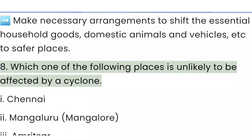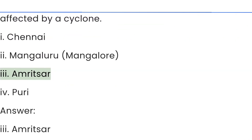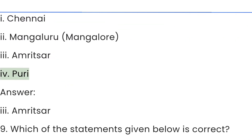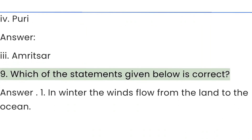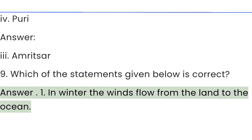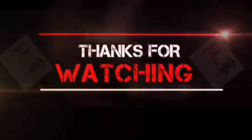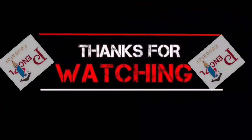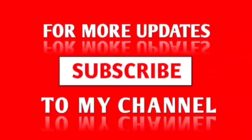Question 8: Which place is unlikely to be affected by a cyclone — Chennai, Mangaluru, Amritsar, or Uri? Answer: Amritsar. Question 9: Which of the statements given below is correct? Answer: In winter, the winds flow from the land to the ocean. If you like this video, please subscribe to my channel, like, comment and share with your friends. Thank you for watching.